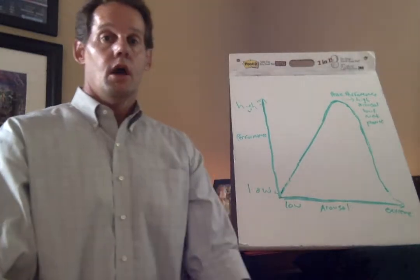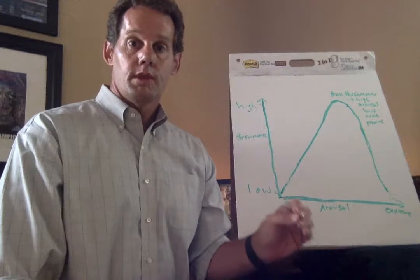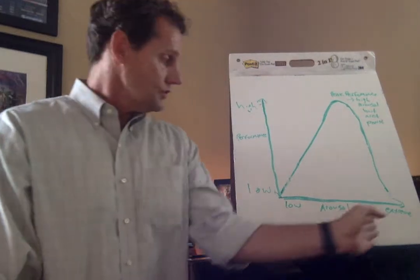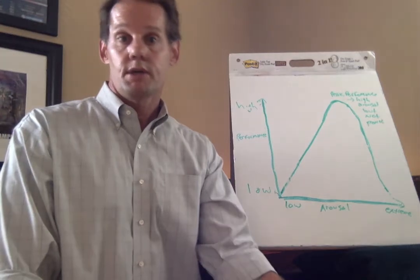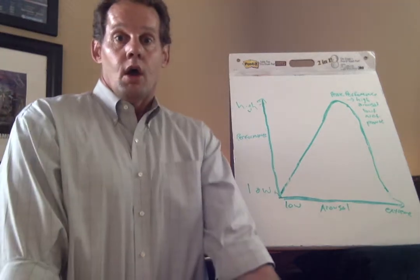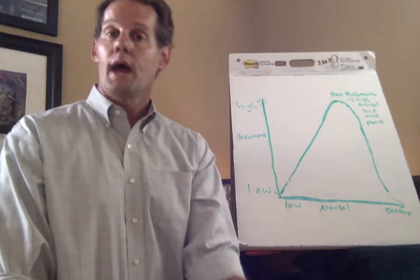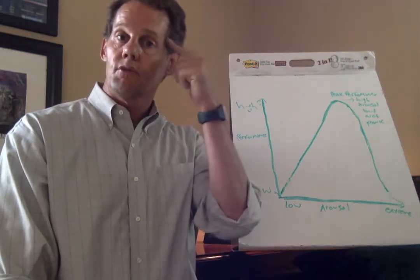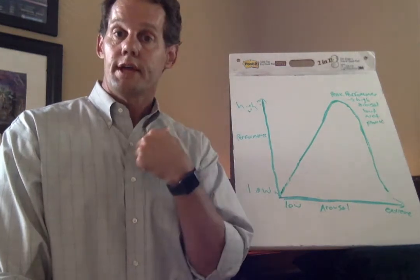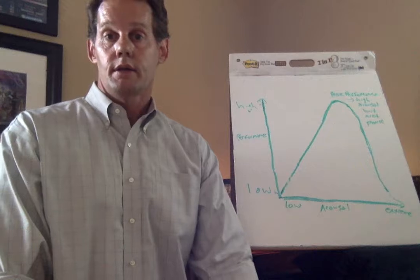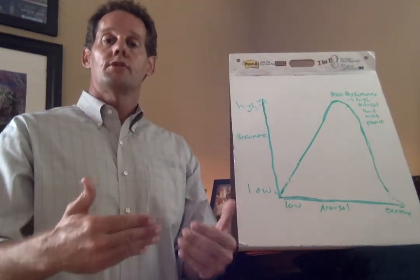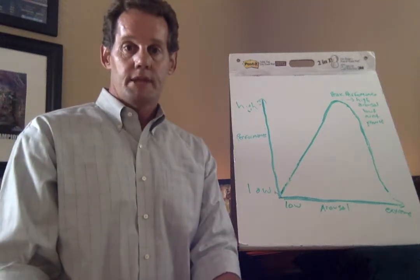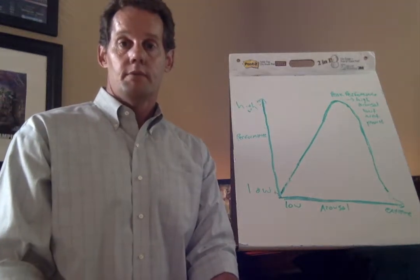And then on the flip side of that coin, the panic, over arousal, extreme arousal side, we want to keep that away. So how do we keep that away? We talked before about the clearing breath, where you just blow out like that. And that sends a signal from your brain to your vagus nerve, to your heart to slow down. So that's going to slow down when things are a little over aroused.